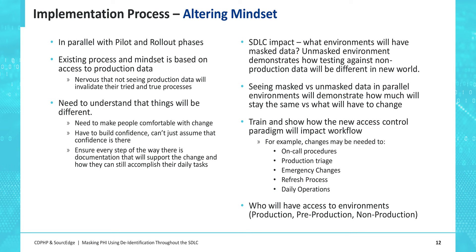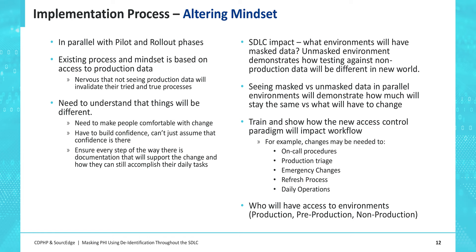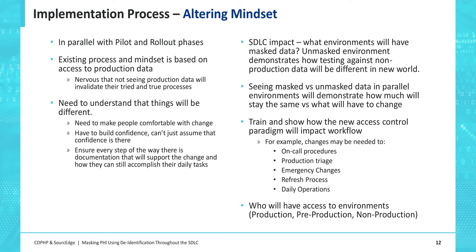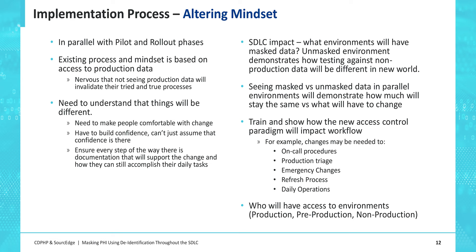We talked about parallel environments for things like on-call procedures and production triage. If you're limiting access, people might be used to grabbing a production file and running it through non-prod when there's a problem. One of the reasons we put in that unmasked environment is so that when you need something right now, you have it ready immediately rather than taking four days to set it up. The refresh process means getting people to understand what that means. And daily operations — a limited number of people now have access to certain files, not everybody in IT.